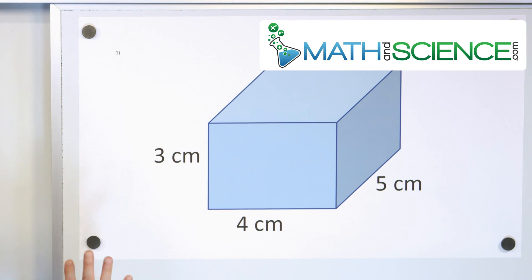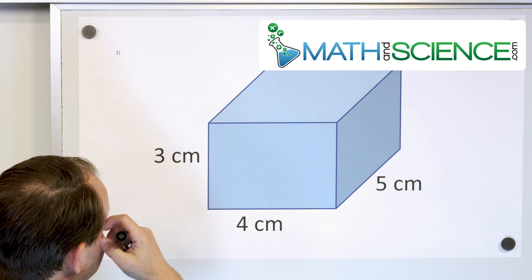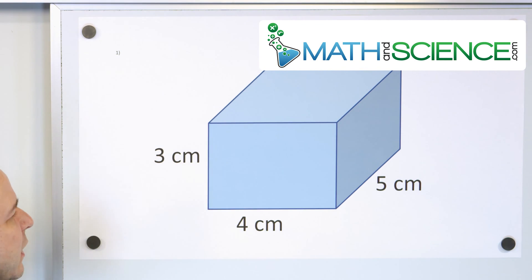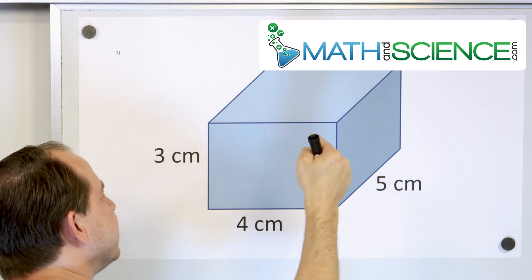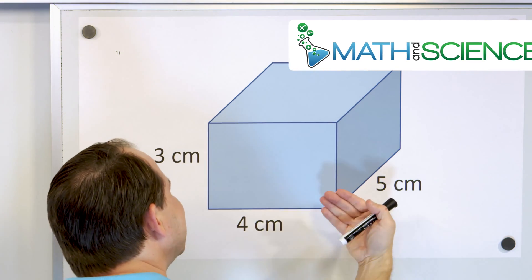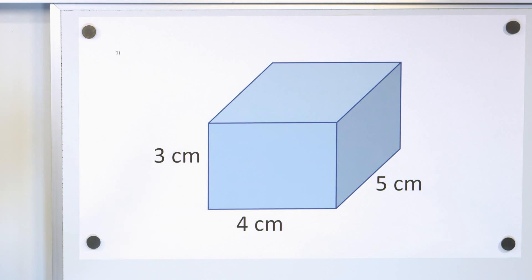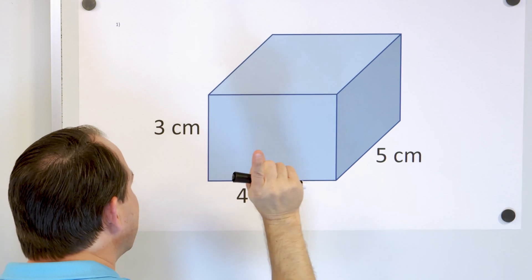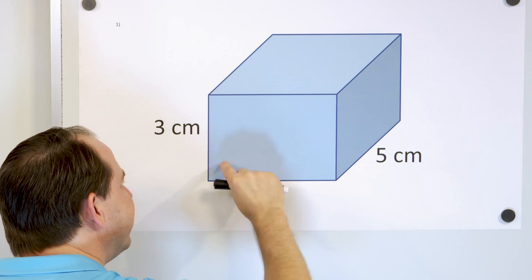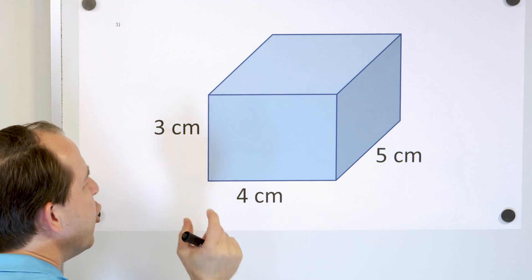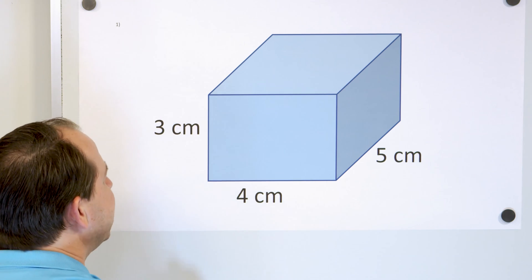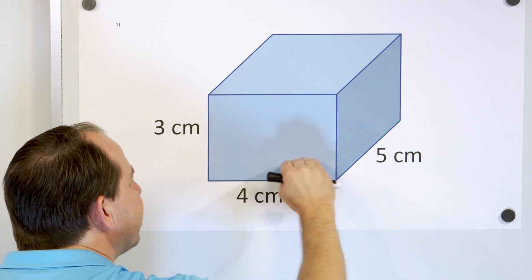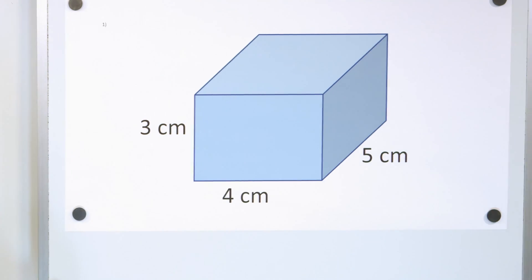Let's take our first look at our first example. We have a rectangular solid here, four centimeters wide, three centimeters tall, and into the board, it's five centimeters deep. So what we're trying to do when we find volume is how many cubes will fit — not squares, but cubes — inside of this object, where each cube is one centimeter tall, one centimeter wide, and one centimeter deep. So let's first look at only the bottom layer of this object.